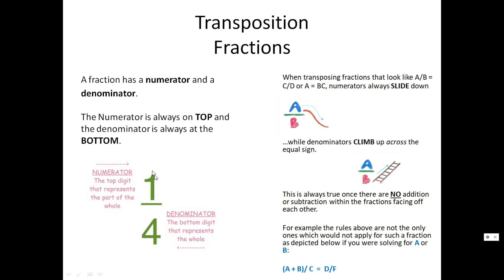The numerator again is the top number and the denominator is the bottom number. When transposing fractions that look like a over b equal to c over d, numerators always slide down. Again, when transposing fractions that look like a over b equal to c over d, numerators always slide down.